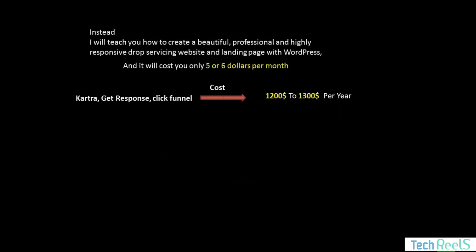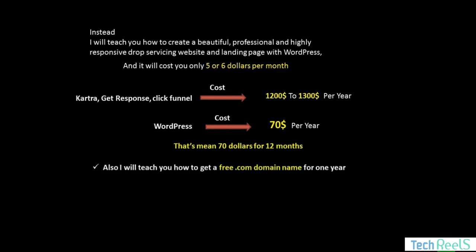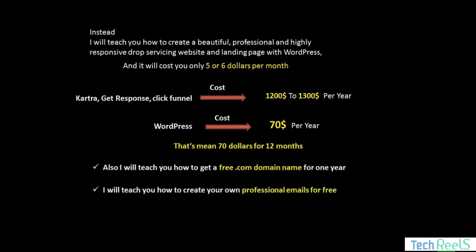Instead, I will teach you how to create a beautiful, professional, and highly responsive drop servicing website and landing page with WordPress — and it will cost you only around five to six dollars per month. Using Kartra, GetResponse, or ClickFunnels costs around $1,200 to $1,300 per year, but with WordPress the same thing will cost you around $70 per year. I will also teach you how to get a free .com domain name for one year and how to create your own professional emails for free. If you completely watch this course it will be a life-changing decision — please provide a rating and review to encourage me. Thank you for watching, see you in the next lecture.